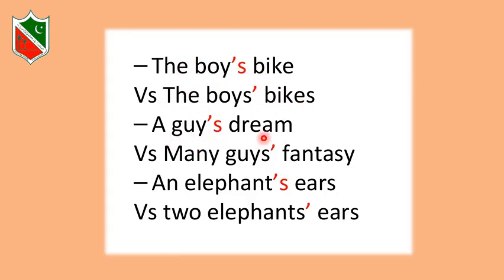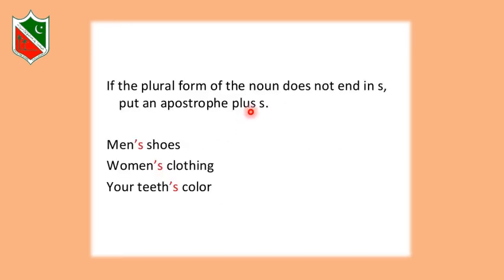Let's see some comparisons: the boy's bike versus the boys' bikes; a guy's dream versus many guys' fantasy; an elephant's ears versus two elephants' ears. In the first of each pair, the noun is singular so the apostrophe goes before the S. In the second of each pair, the noun is plural so the apostrophe goes after the S.